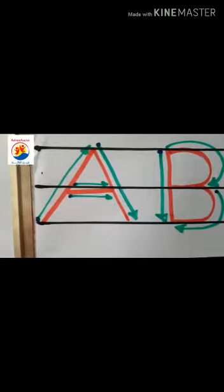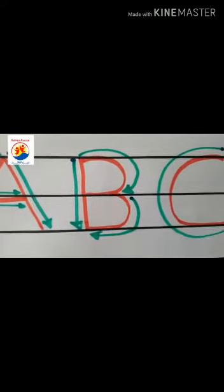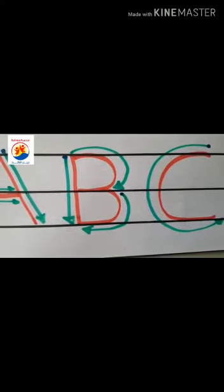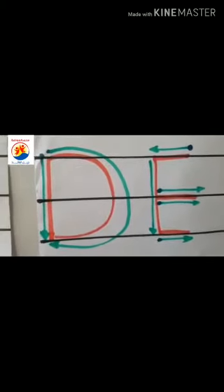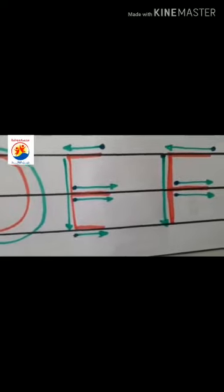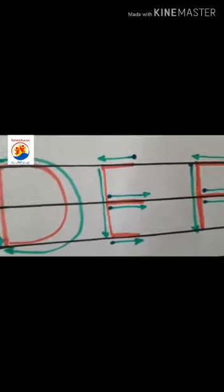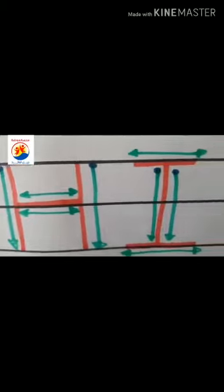A is for Apple. B is for Ball. C is for Car. D is for Duck. E is for Elephant. F is for Fish. G is for Girl. H is for Hat. I is for Icicine. J is for Jacket. K is for Kangaroo. L is for Lemon.